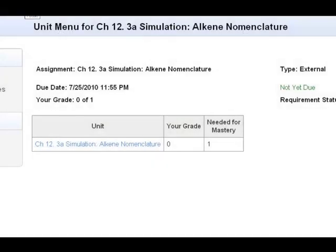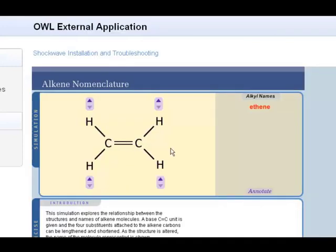I'm going to use the simulation in Aloe 12-3 to show you some examples of cis-trans alkenes. Here we start off with a very simple alkene. It's called ethene. Two carbons with a double bond.